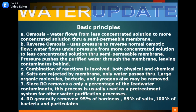The basic principle of osmosis is that water flows from a less concentrated solution to a more concentrated solution through a semi-permeable membrane. In reverse osmosis, pressure is applied to reverse the normal osmotic flow, so water flows under pressure from the more concentrated solution to the less concentrated solution through a semi-permeable membrane. Pressure pushes the purified water through the membrane, leaving contaminants behind. The process involves both physical and chemical reactions. Solutes are rejected by the membrane and only water passes through. Large organic molecules, bacteria, and pyrogens may also be removed. Since RO removes only a percentage of the feed water contaminants, this process is usually used as a pre-treatment system for other water purification processes.